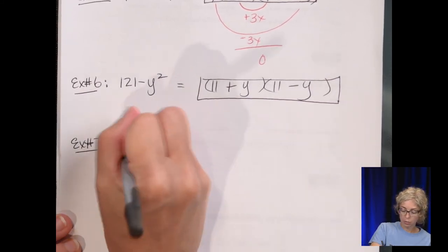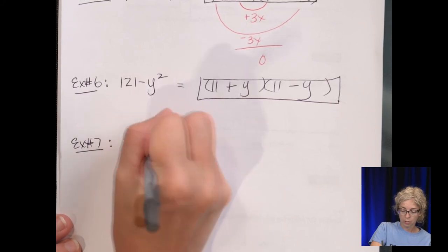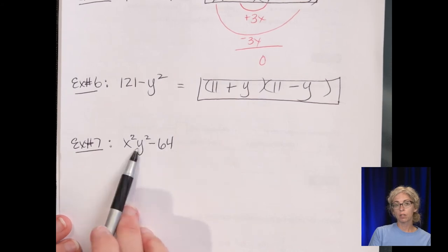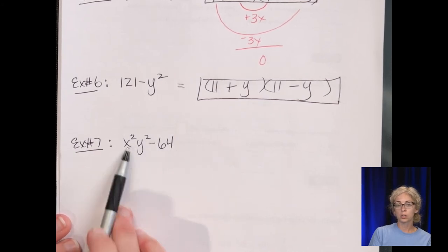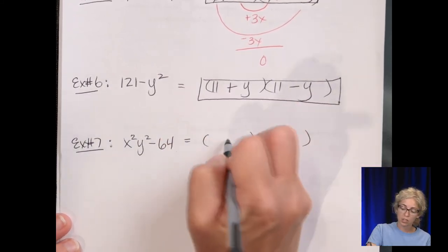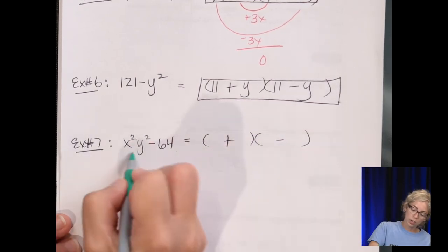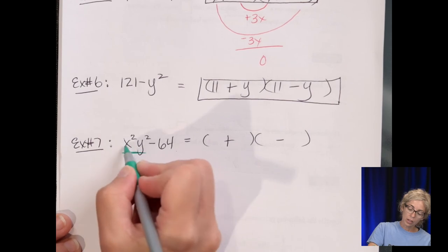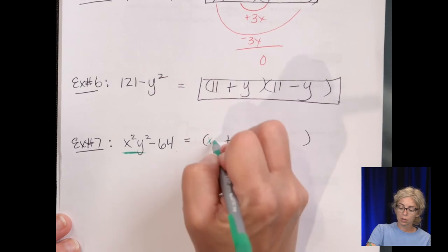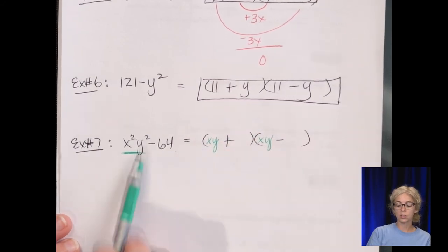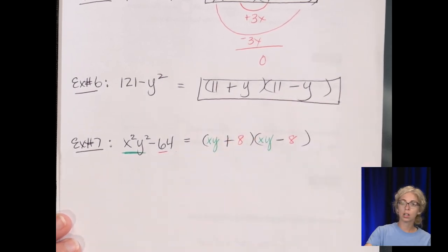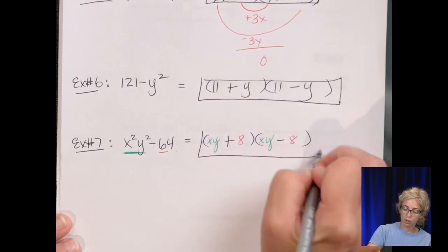Example 7: x²y² - 64. There's no variable in common and no GCF. Set up two parentheses with different signs. For x²y²: xy × xy = x²y². For 64: 8 × 8 = 64. So the answer is (xy + 8)(xy - 8).